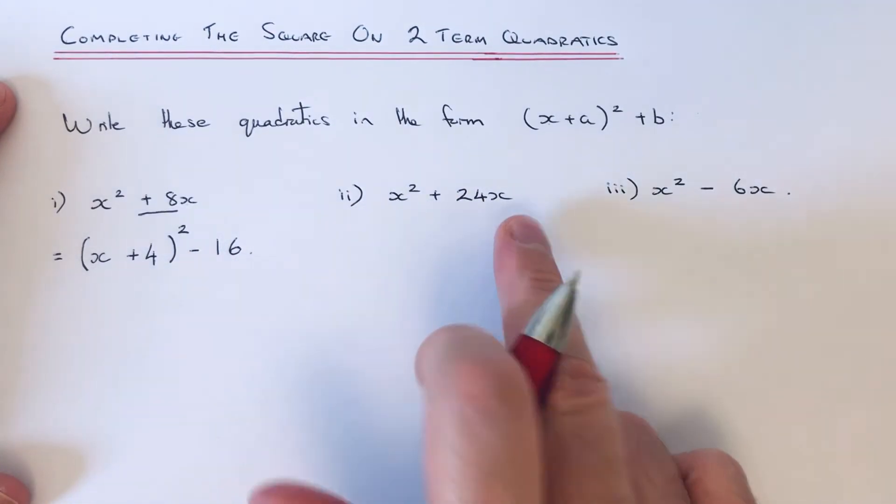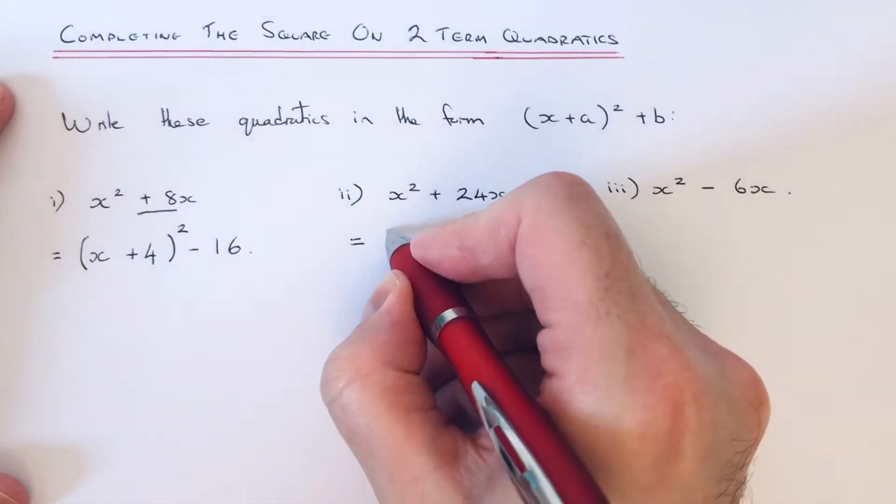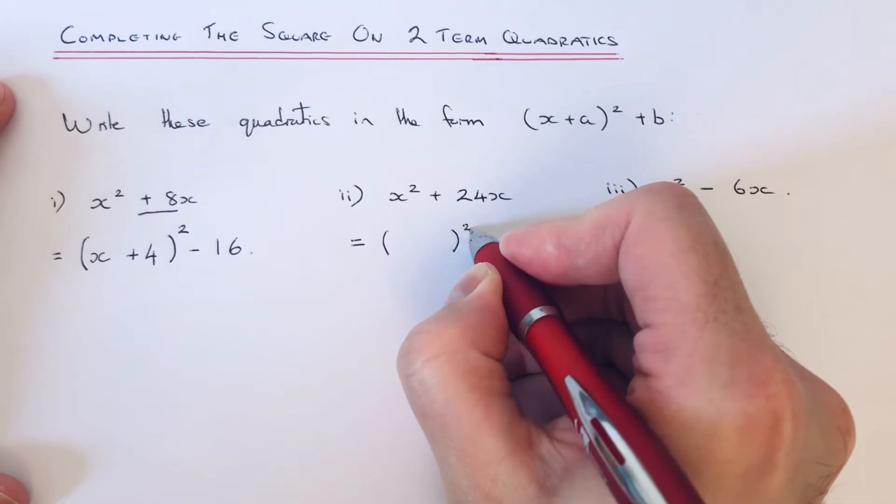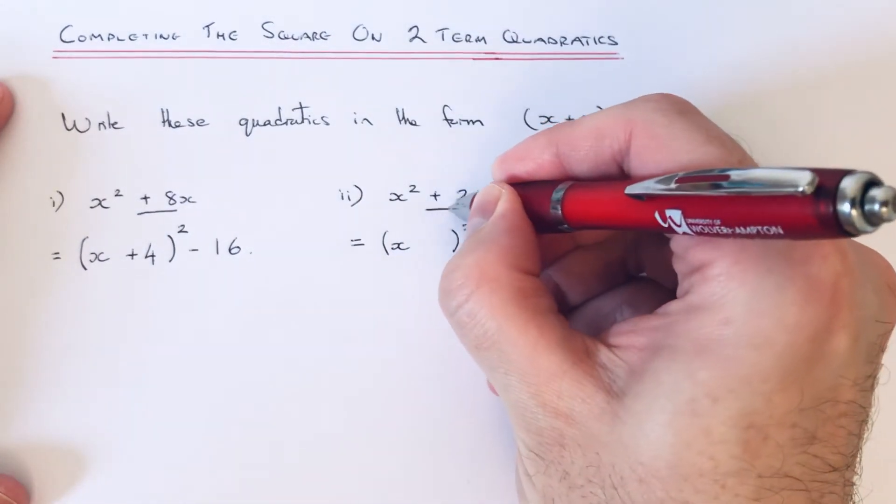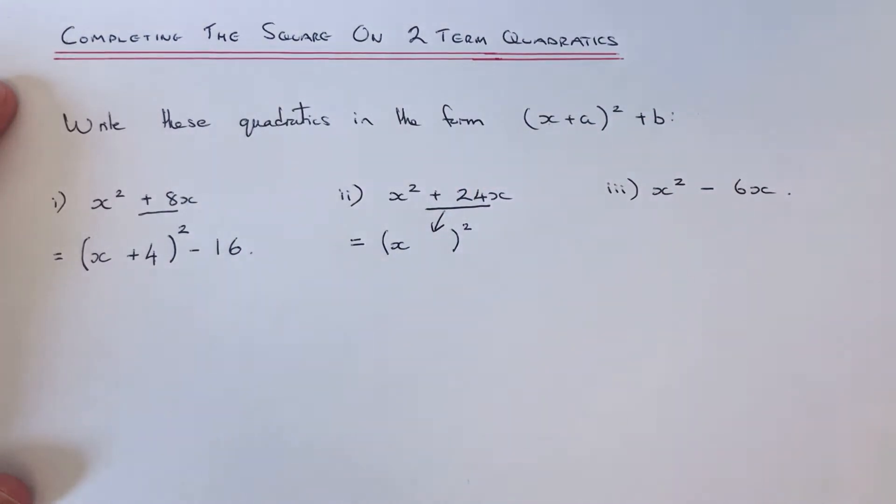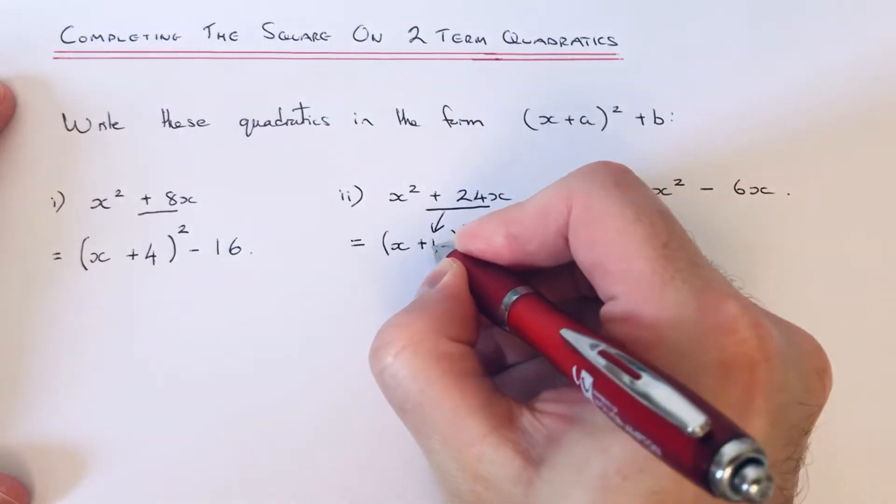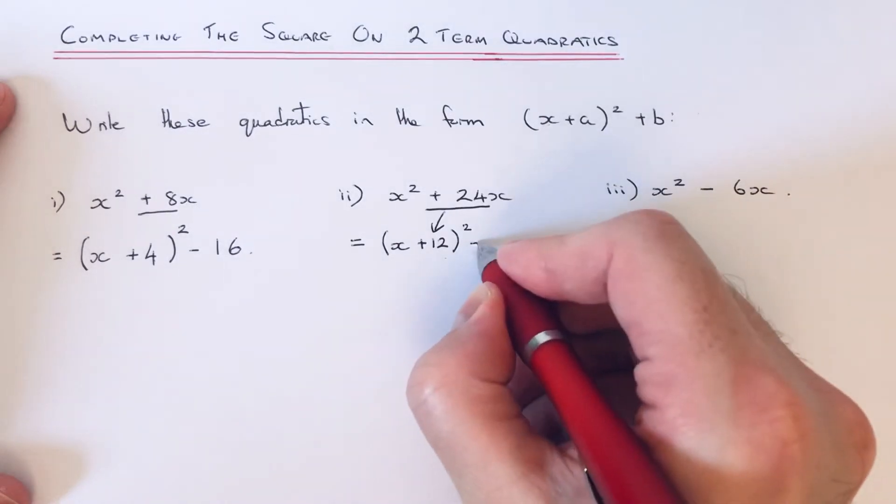So let's do another example then. This time we've got x squared plus 24x. So if we start off like that again. To get the number inside the bracket, we half the number before x. So half of 24 is 12. So we copy that there. And then to get b, we square the 12. So 12 squared is 144. And we take that off the end.